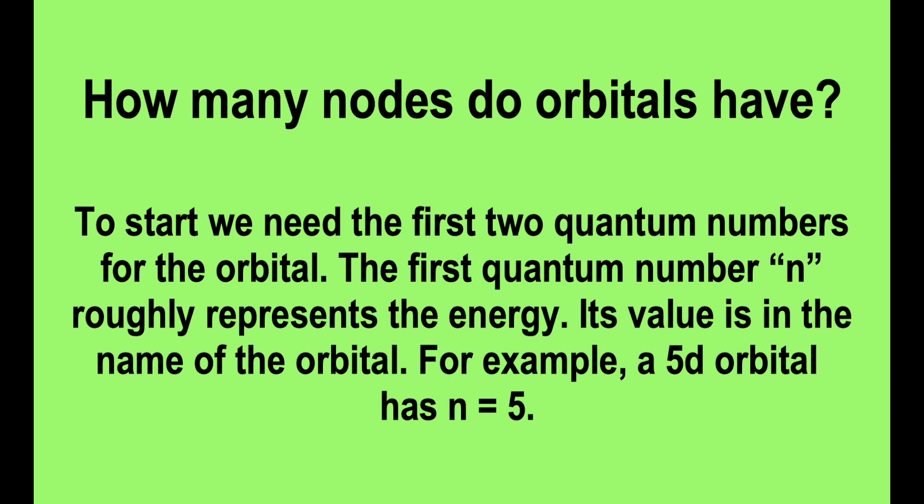The first quantum number, n, roughly represents the energy. Its value is in the name of the orbital. For example, a 5d orbital has n equals 5.